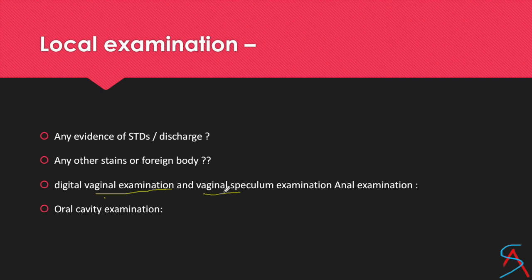If possible, do a vaginal speculum examination to look at structures in detail. This local examination is generally done in the lithotomy position. Also examine the anal area, as I mentioned, if there was anal penetration, look for evidence of that. In the vaginal speculum examination, look for any semen or any bruising, abrasion, or laceration in the vagina. Avoid doing vaginal speculum examination if the person is a minor, unmarried, or if the hymen is not torn.